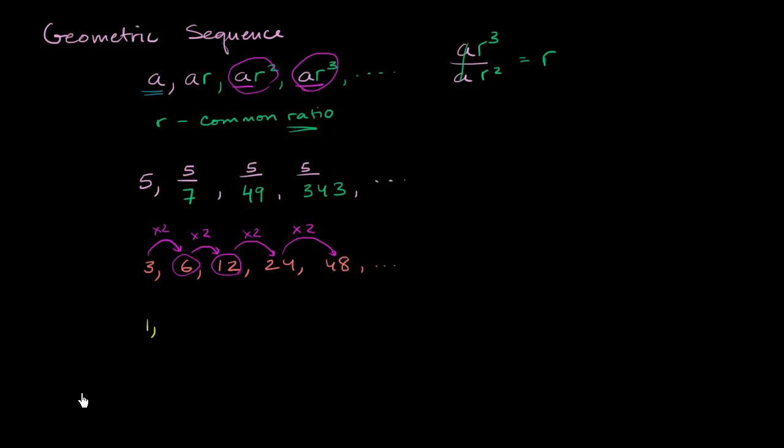And maybe our common ratio here is negative 3. So 1 times negative 3 is negative 3. Negative 3 times negative 3 is positive 9. Positive 9 times negative 3 is negative 27. And then negative 27 times negative 3 is positive 81.